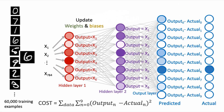Let's see what it looks like to update the weights and biases for our first hidden layer. Again, we calculate the gradient with respect to the weights and biases of the first hidden layer, and this tells us how to change the weights and biases for all the neurons in the first hidden layer.